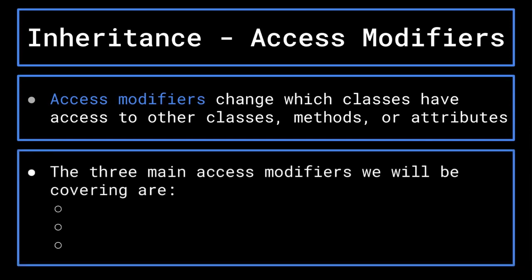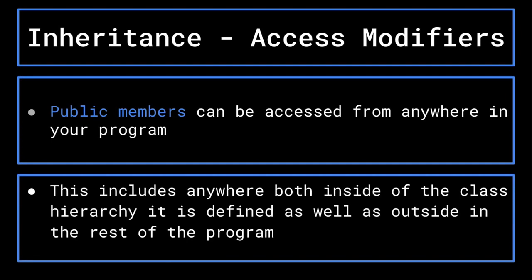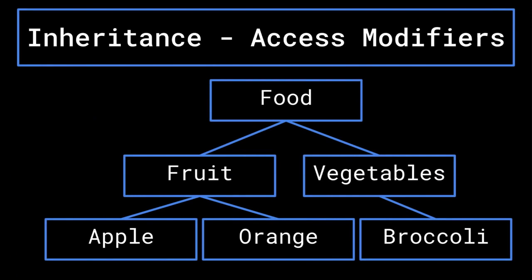When you are writing object oriented code, many of the classes you create will fit somewhere in the broader class hierarchy, which acts as a web of classes with different relationships to one another. The next important topic to cover in terms of inheritance is the access modifiers that change which classes can access which attributes, methods, or even classes as a whole. There are three main access modifiers: public, private, and protected. A public member or class can be accessed from anywhere — including any superclasses, subclasses, or anywhere else in the program. This is very useful when you need to have access from a wide variety of places in your program.